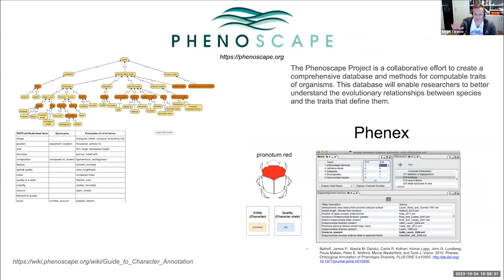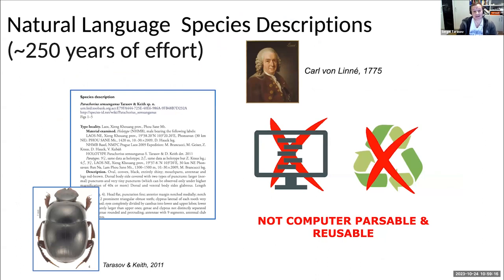We also have a wealth of methods to work with semantic phenotypes represented using ontologies. I would like to specifically emphasize the Phenoscape project — a collaborative effort to create comprehensive databases and methods to work with semantic phenotypes. Phenoscape developed protocols to annotate or code different characters and traits using ontologies, and software for annotating character matrices. However, species descriptions are much more flexible and less constrained than character matrices.